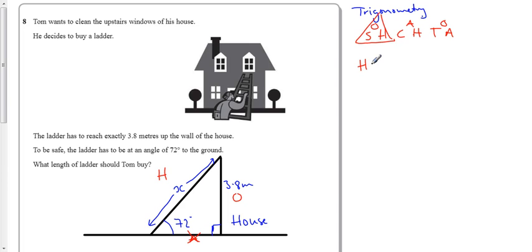The hypotenuse equals the opposite divided by sine of the angle, so x equals 3.8 meters divided by sine of 72 degrees. Using a calculator, we find the length is 3.995564521 meters.